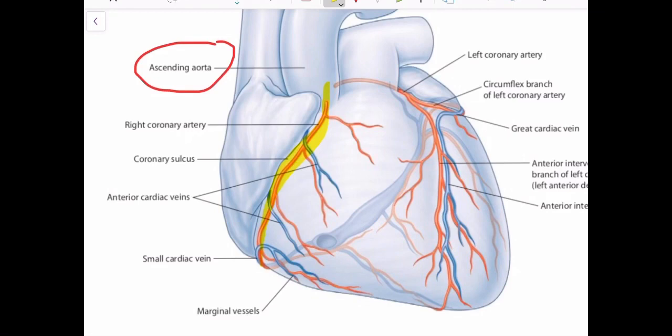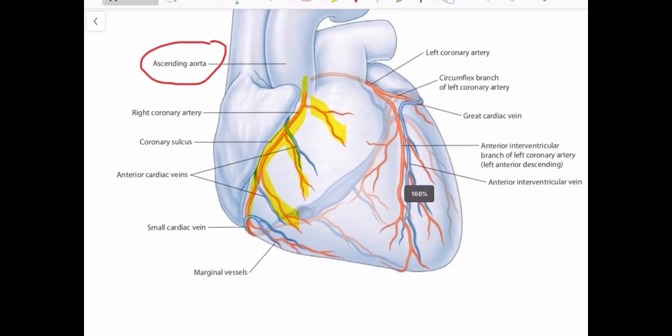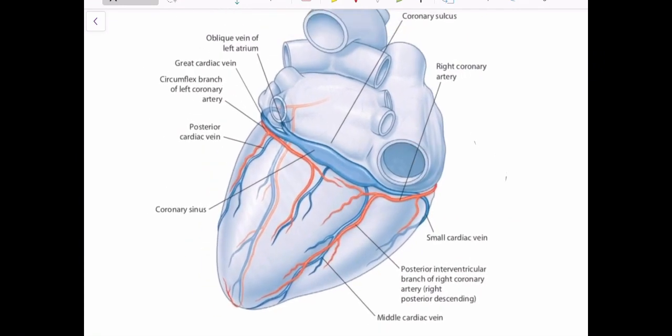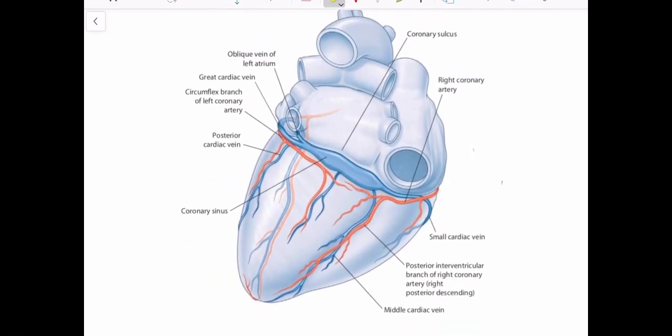You can see these are the branches. Then it turns backwards at the lower margin of the right ventricle. This is how it looks when you look at the heart from behind. It comes from here and then divides into these branches and gives rise to this posterior interventricular branch of the right coronary artery. This posterior interventricular artery supplies a large amount of the posterior wall of the left ventricle.